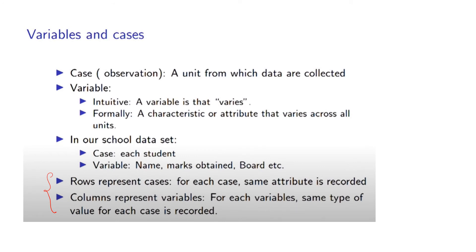A case or observation is a unit from which data are collected. A variable is a characteristic or attribute that varies across all units. In our school dataset, the case is each student and the variables are name, marks, bold, etc. Rows represent cases — for each case, the same attribute is recorded. Columns represent variables — for each variable, the same type of value for each case is recorded.